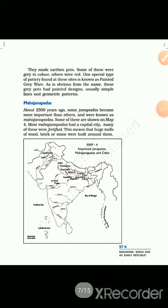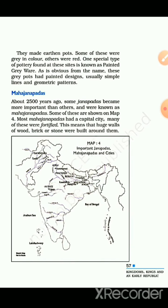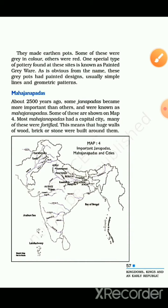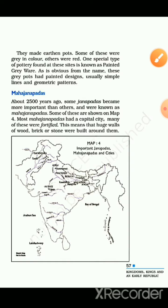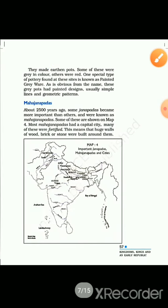The people of the Janpads made earthen pots. Some of these were grey in colour, others were red — we have seen one picture like this. One special type of pottery found at these sites is known as painted greyware. As is obvious from the name, these grey pots had painted designs — usually simple lines and geometric patterns, like circular patterns. These designs were quite beautiful, as you can see in the picture.